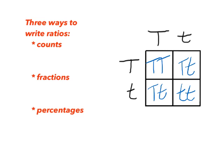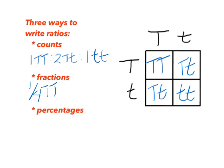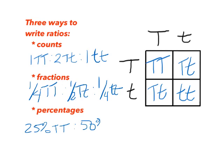There are three ways to write out the genotype ratio. First, as a count: one homozygous dominant big T big T, two heterozygous big T little t, and one homozygous recessive little t little t. Second, as fractions: one-fourth big T big T, one-half big T little t, and one-fourth little t little t. Third, as percentages: 25% big T big T, 50% big T little t, and 25% little t little t. Any one of these three is correct — pick a style and use it.